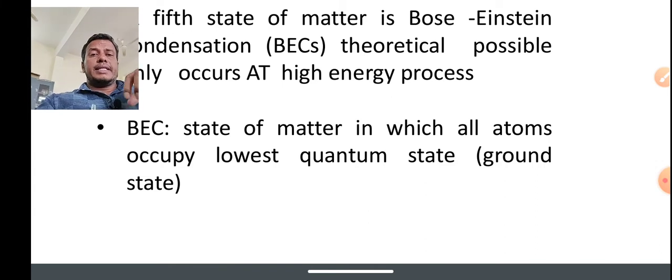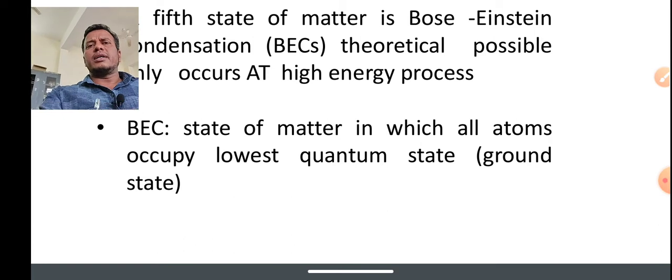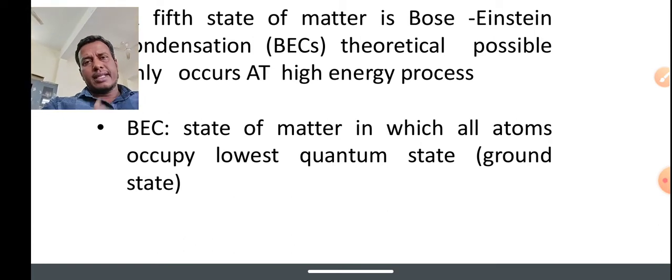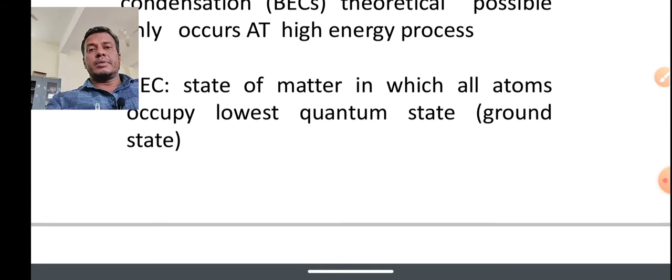In the BEC, that is Bose-Einstein condensations, all atoms occupy the lowest quantum states, almost all are in ground state. Let's say it is ground state—the very lowest quantum states can accumulate all the atoms in the BEC.